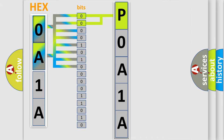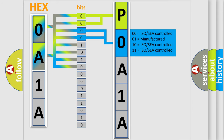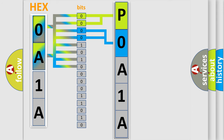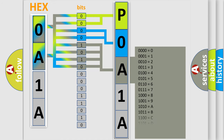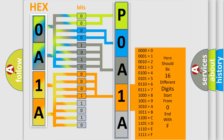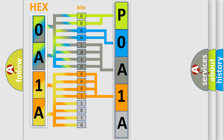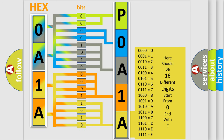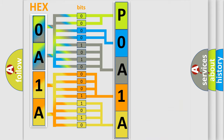The next two bits determine the second character. The last four bits of the first byte define the third character of the code. The second byte is composed of a combination of eight bits. The first four bits determine the fourth character, and the combination of the last four bits defines the fifth character. A single byte conceals 256 possible combinations.